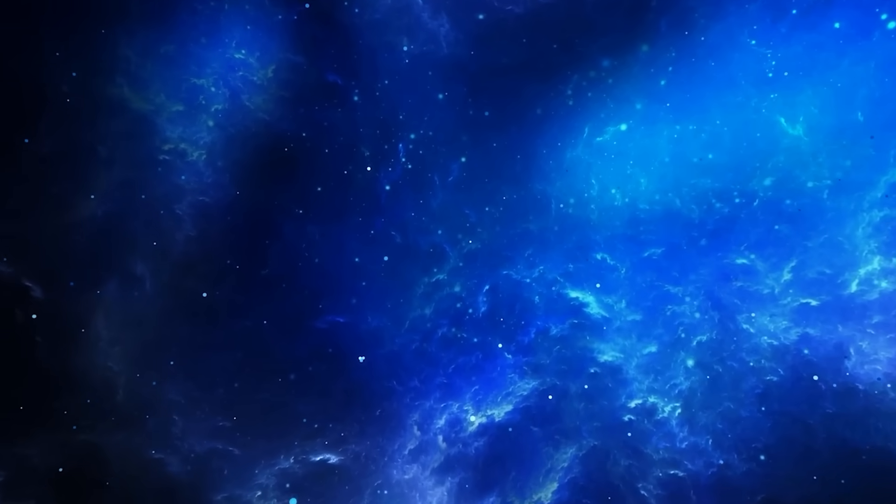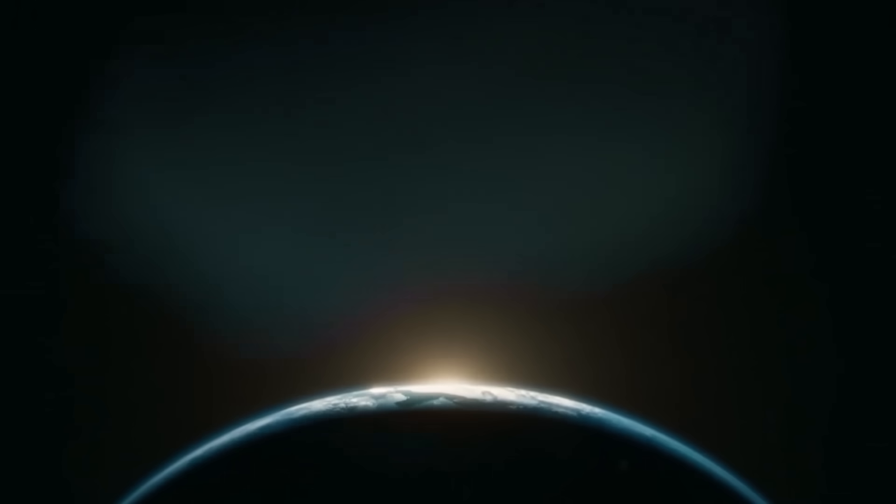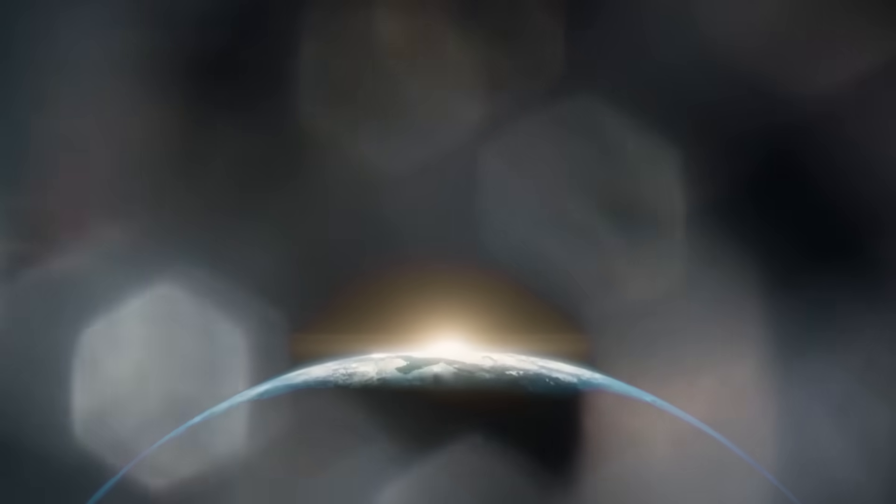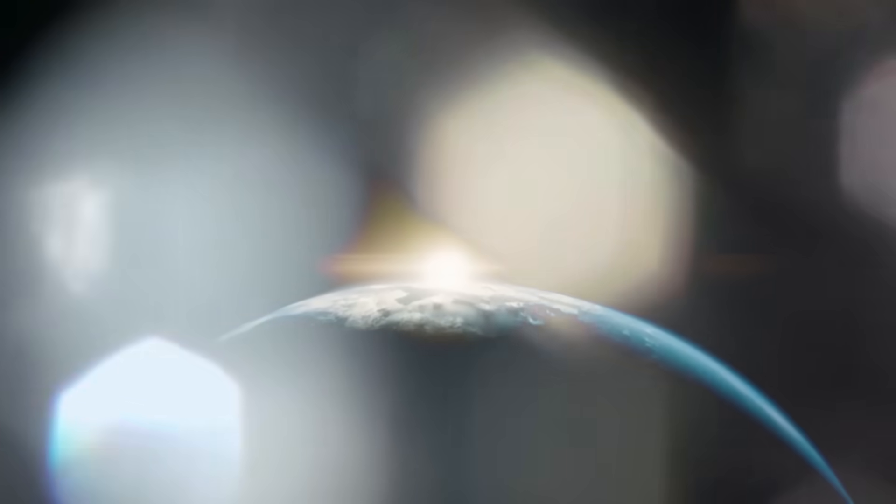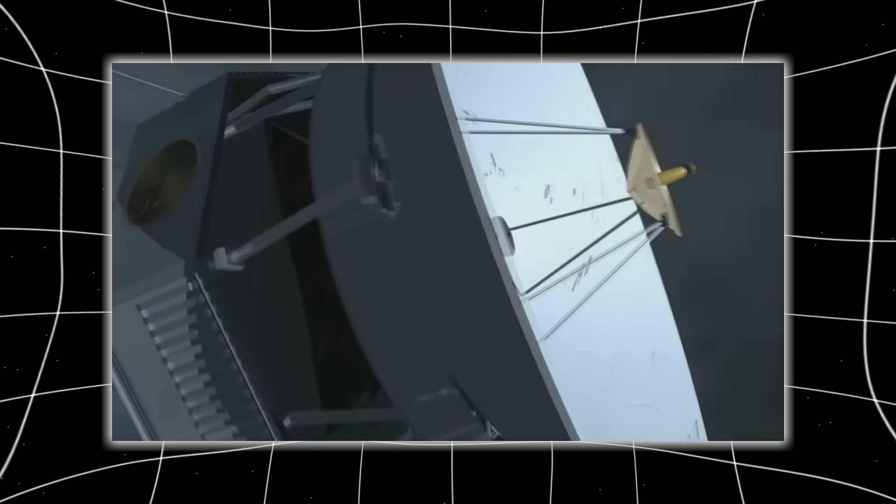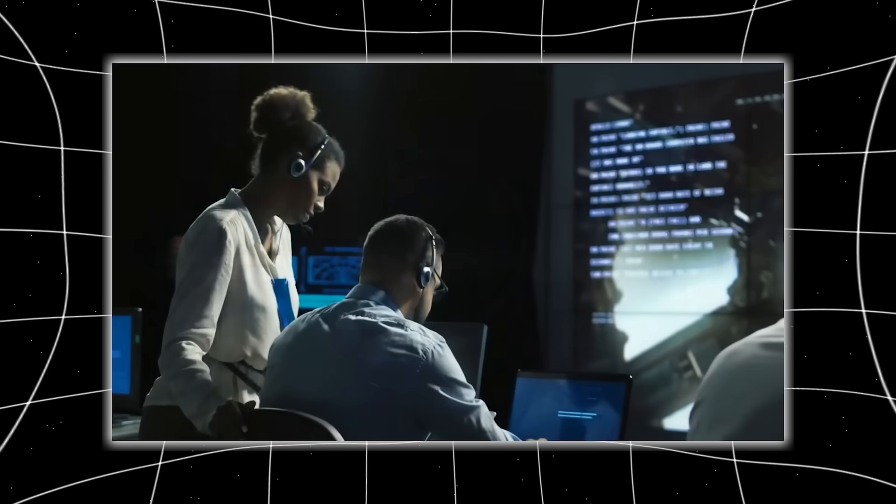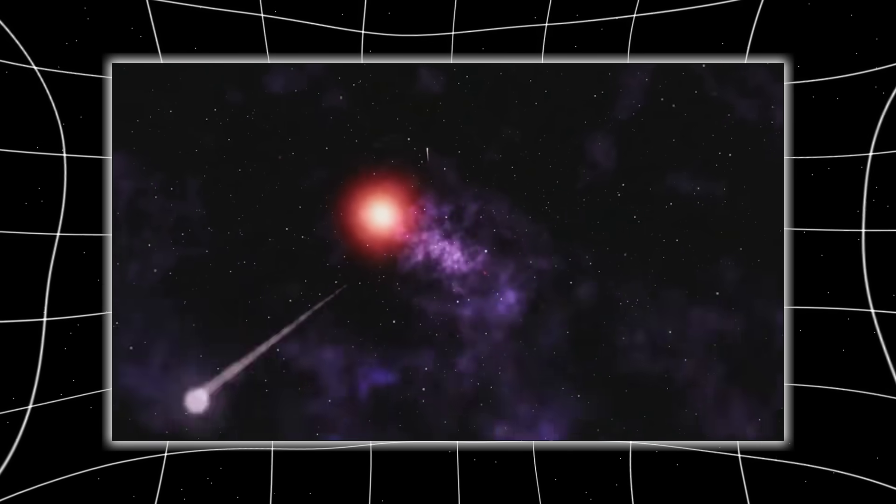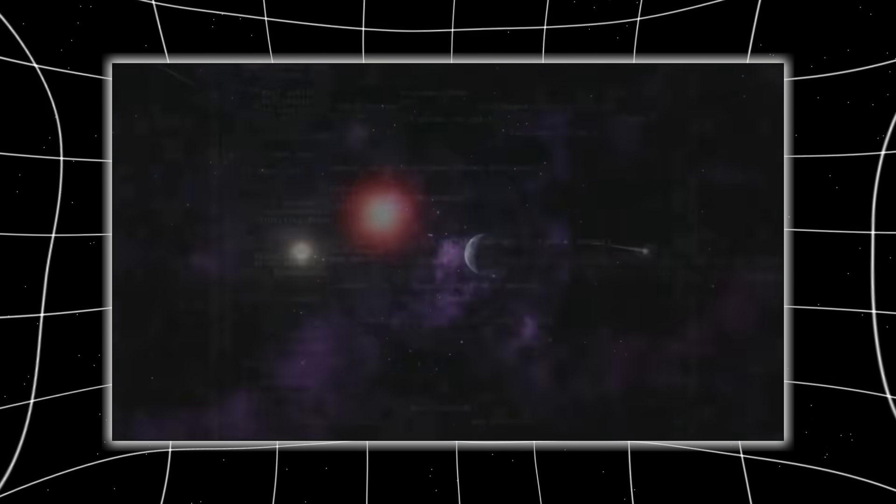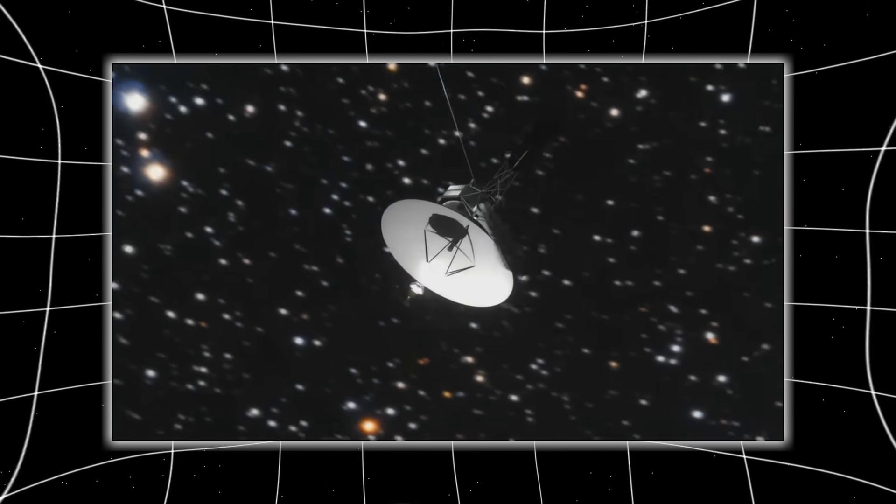Voyager 1's journey began with a rare cosmic alignment, a window that only opens once every 175 years. Jupiter, Saturn, Uranus, and Neptune had lined up like stepping stones across the solar system, and NASA seized the opportunity to build two spacecraft, Voyager 1 and Voyager 2, that could ride the gravity of each planet as a slingshot to the next. The engineering marvels of the 1970s, these probes were built with less computing power than a digital wristwatch.